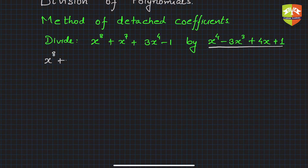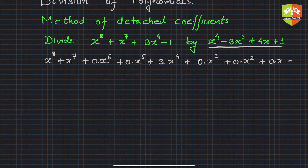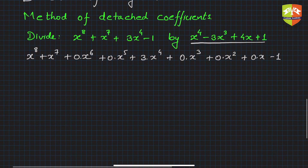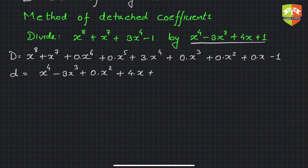After completing the dividend, we get: x⁸ + x⁷ + 0x⁶ + 0x⁵ + 3x⁴ + 0x³ + 0x² + 0x − 1. This is the dividend. The divisor, after completing, is: x⁴ − 3x³ + 0x² + 4x + 1.